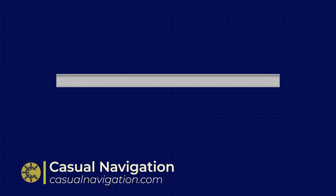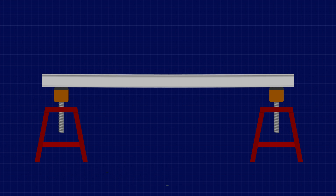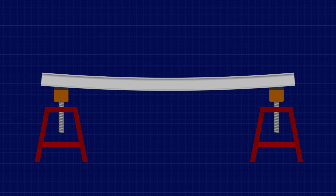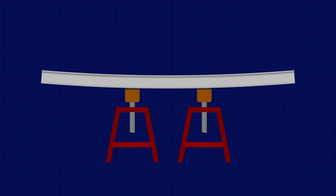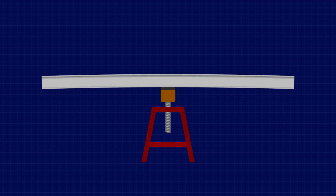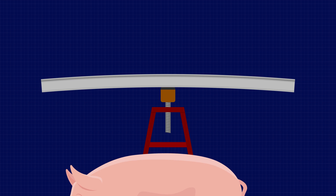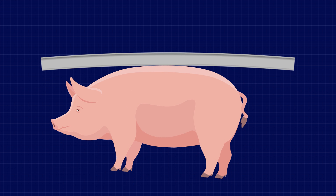Let's look at this beam. When you support it from its ends, it's easy to imagine the middle sagging down a little. With sagging, the top face of the beam is under compression and the bottom face is under tension. Switch it around, maybe by moving the supports to the middle, and now the top of the beam is under tension and the bottom is under compression.